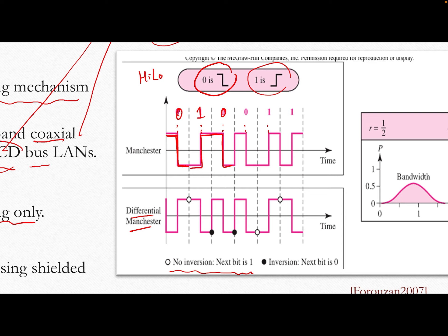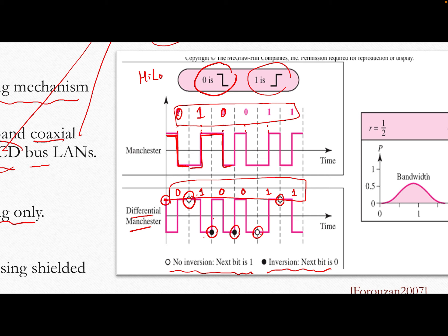For Differential Manchester, if there is no inversion at the beginning of the bit, the next bit is one. So no change of value here means the next bit is one. A change of value from low-to-high means the next bit is zero. For the first bit you need to know what came before to interpret it. If there is an inversion at the start, the bit is zero. There is also a transition in the middle of every bit.